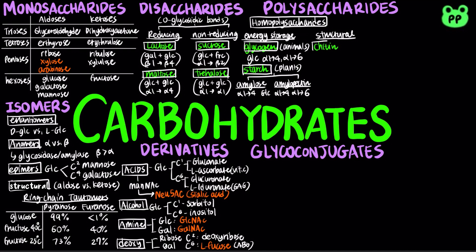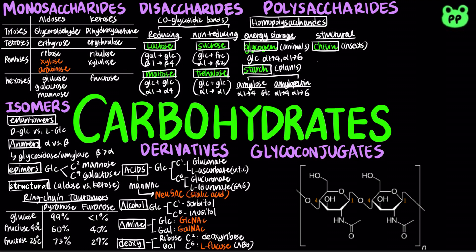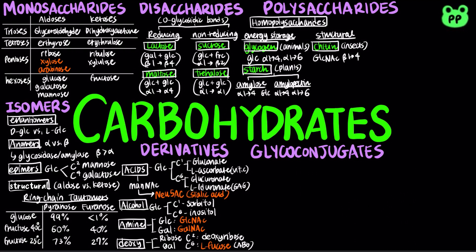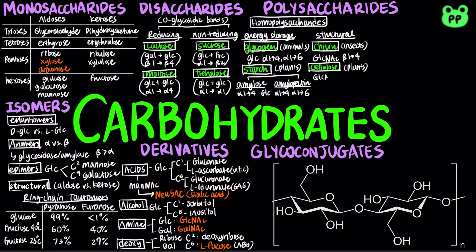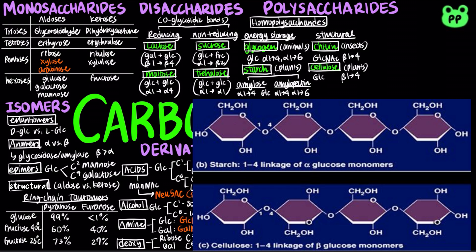Structural homopolysaccharides include chitin, which is found in the exoskeleton of insects as well as hyphae in fungi. It is composed of GlcNAc, or N-acetylglucosamine, linked by beta-1,4 linkages. Cellulose is found in the cell walls of plants and is composed of glucose residues linked by beta-1,4 glycosidic bonds. The human digestive system only contains alpha-amylases and glycosidases, which break down alpha-1,4 linkages, but we lack an enzyme to hydrolyze beta-1,4 linkages. Therefore, we cannot process cellulose as a fuel source. It is known as an insoluble fiber.